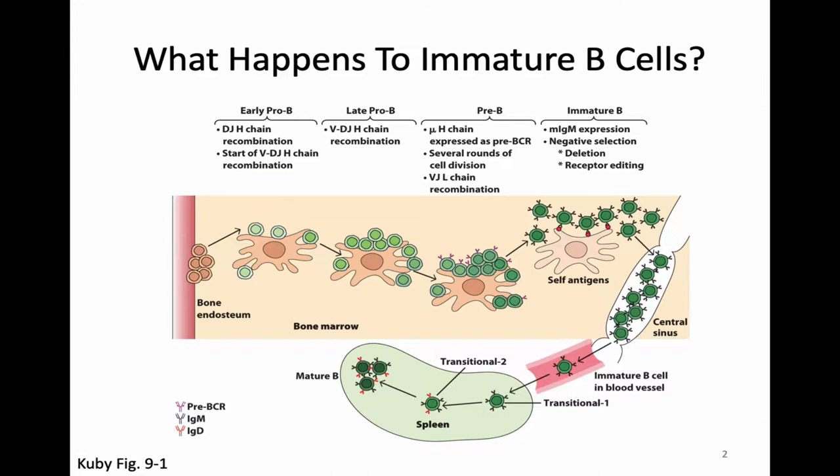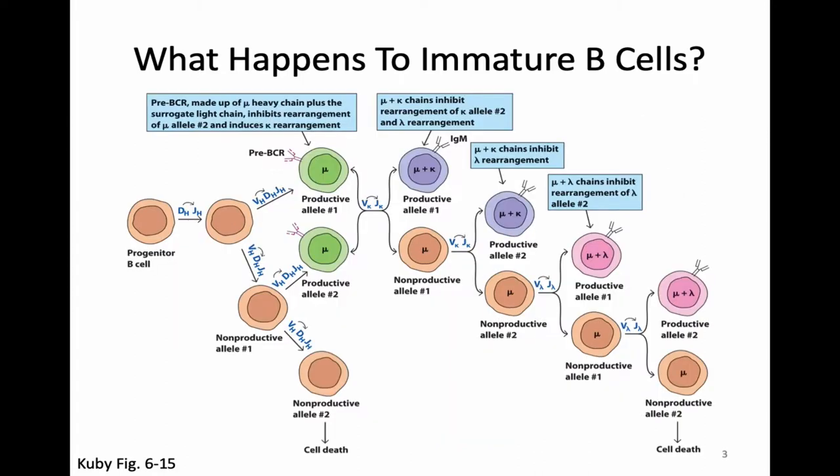Our immature B-cell eventually will leave the bone marrow and will go out into the periphery where it will be a mature B-cell that will fight against antigen. If everything goes well in this process, that's what will happen. But we do need to have a few tests to make sure that our immature B-cell is all set.